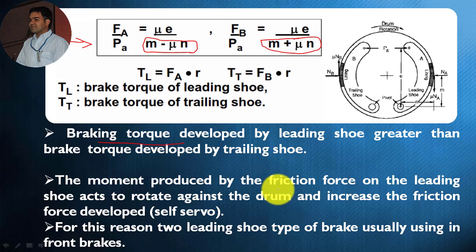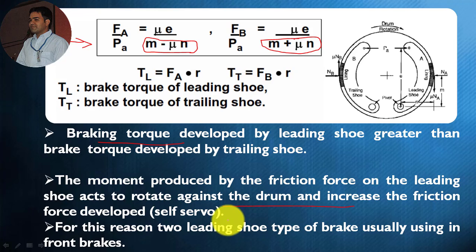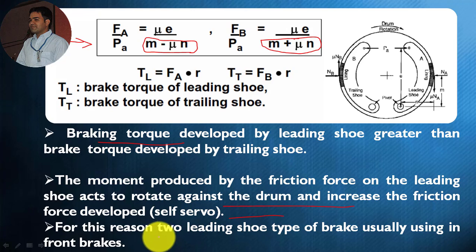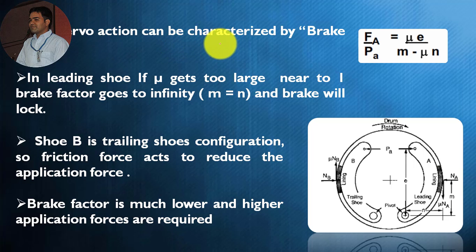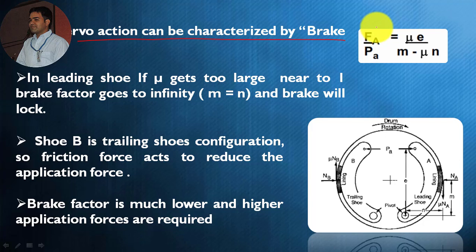The moment produced by the friction force on the leading shoe acts to rotate against the drum and increase the friction force — this is known as the self-servo action. In case of leading shoes we are able to get the self-servo action, or higher mechanical advantage, while applying braking. This is the reason why the majority of manufacturers prefer the two leading shoe type brakes. This servo action can be characterized by the brake factor.